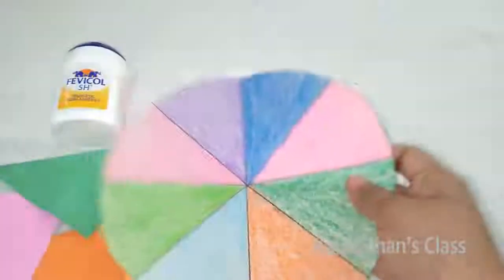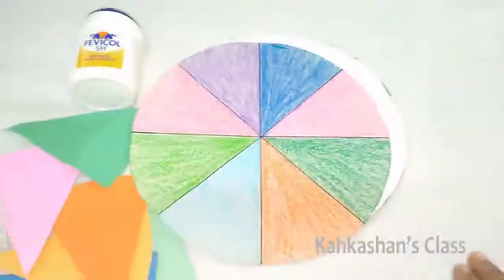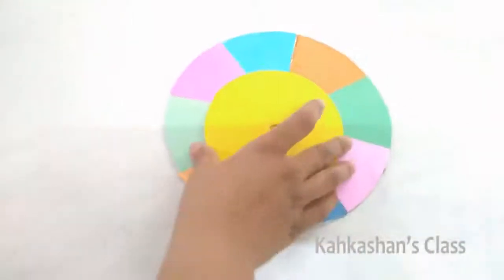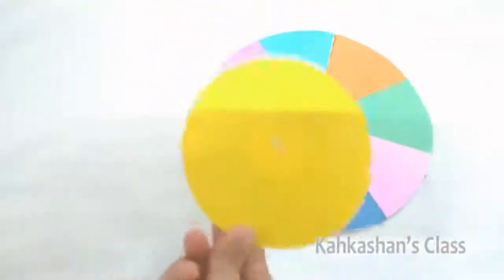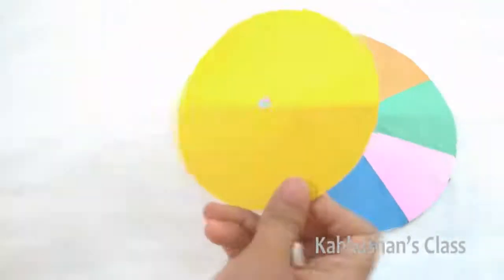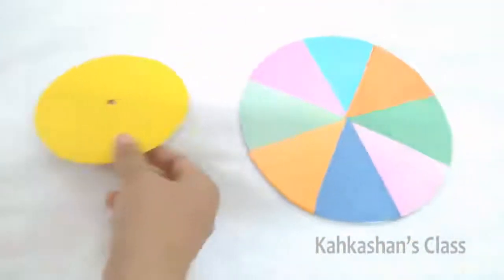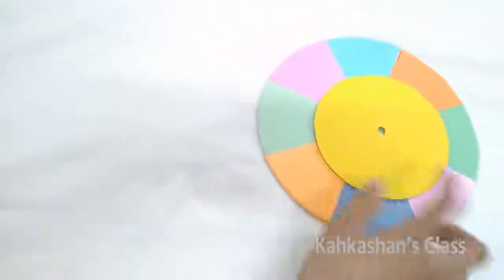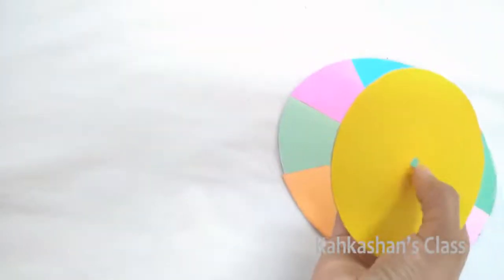Stick them with the glue on the circular disc. To make the small spinning wheel, I have taken an old CD and covered it with yellow paper on one side. There has to be a hole in the middle for the straw to go in.